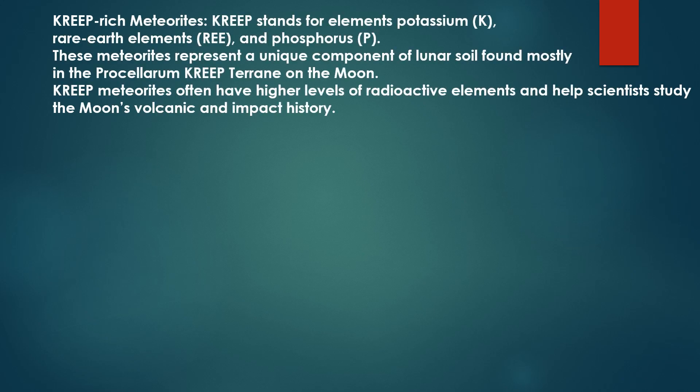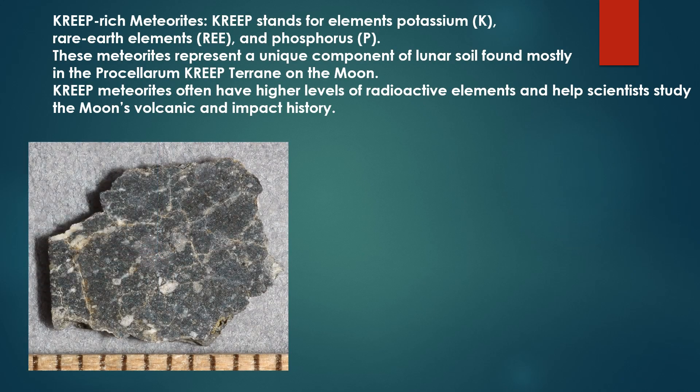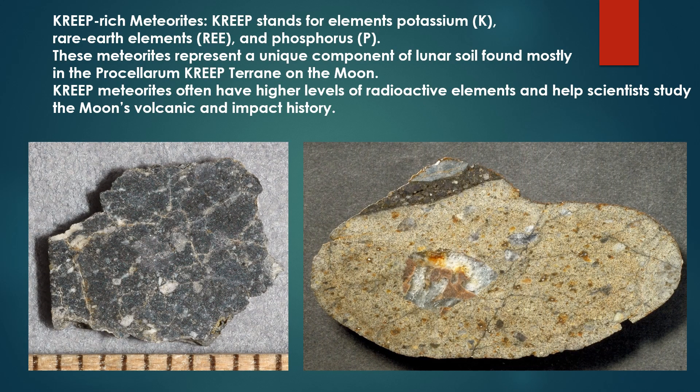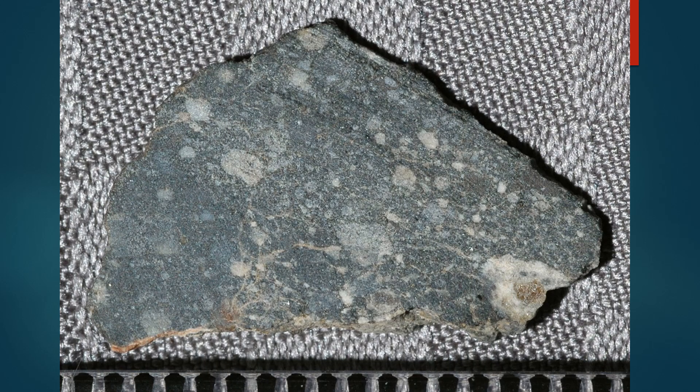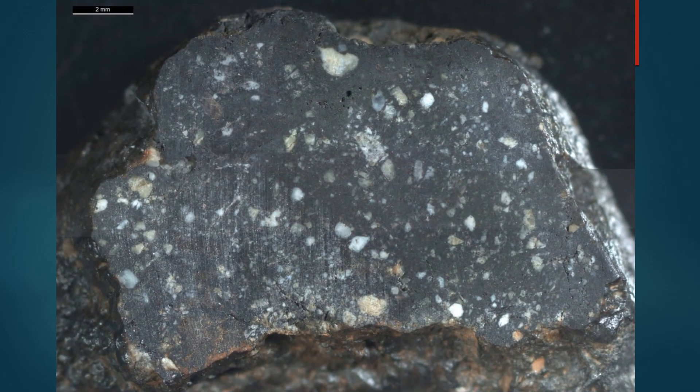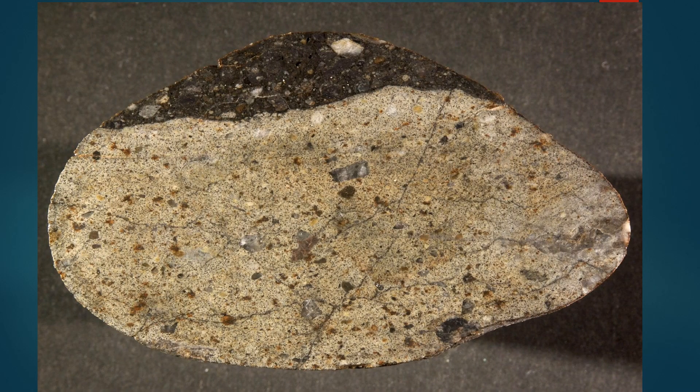KREEP-rich meteorites: KREEP stands for potassium, rare earth elements, and phosphorus. These meteorites represent a unique component of lunar soil found mostly in the Procellarum KREEP Terrain on the Moon. KREEP meteorites often have higher levels of radioactive elements and help scientists study the Moon's volcanic and impact history.